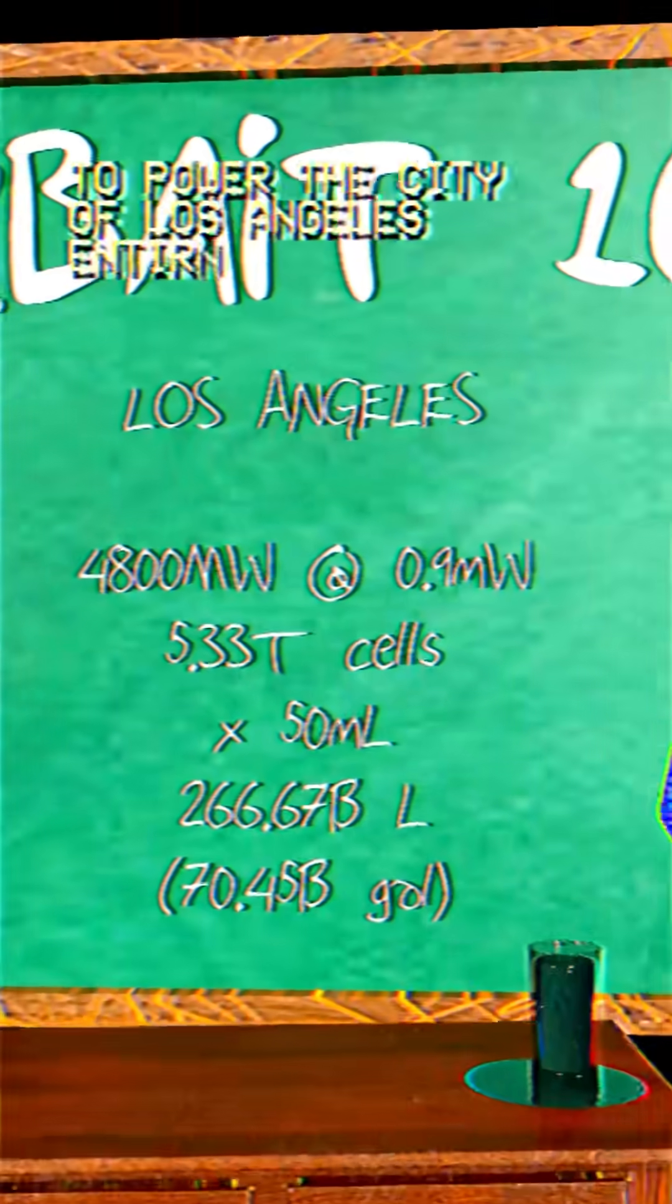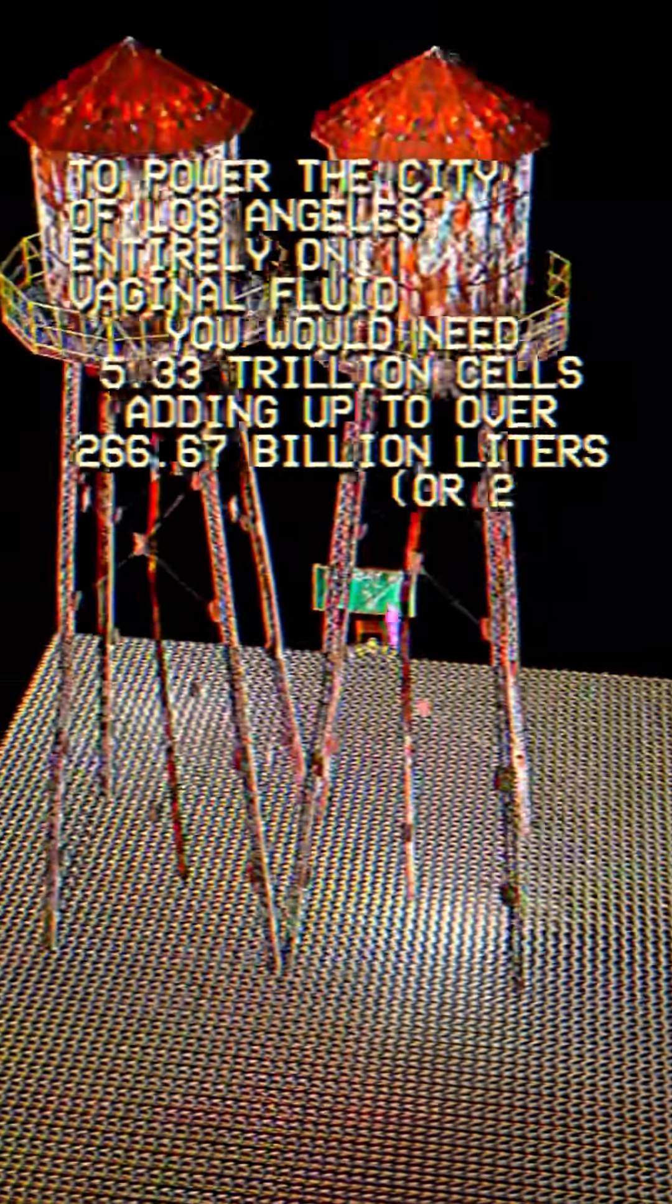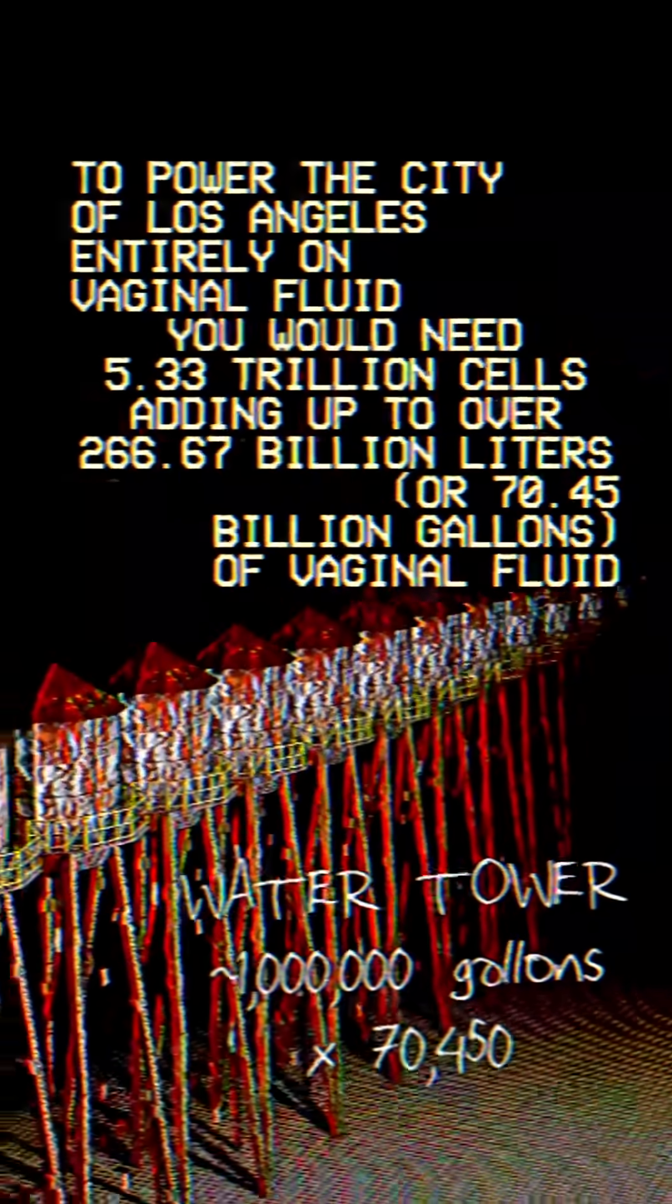To power the city of Los Angeles entirely on vaginal fluid electrochemical cells, you would need 5.33 trillion cells, adding up to over 266.67 billion liters, or 70.45 billion gallons, of vaginal fluid.